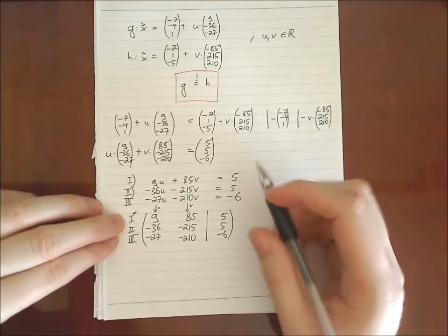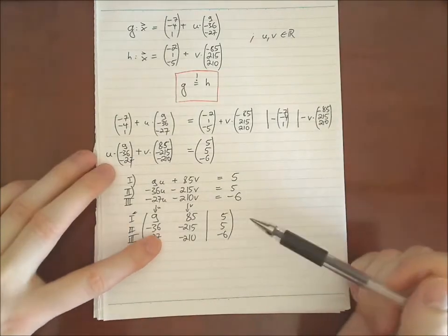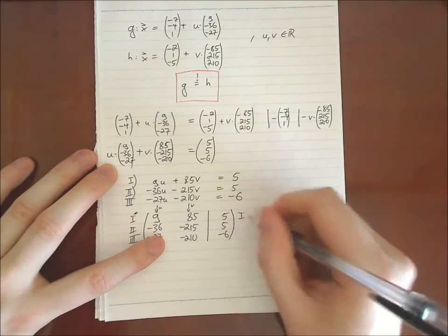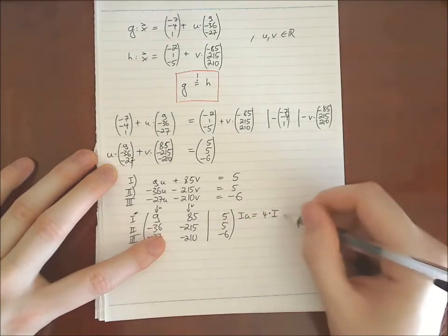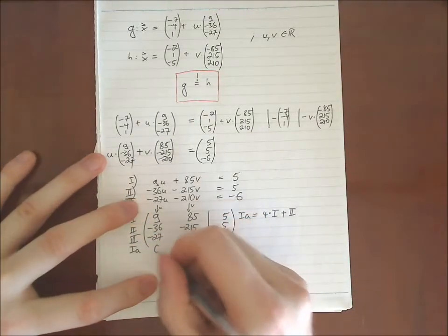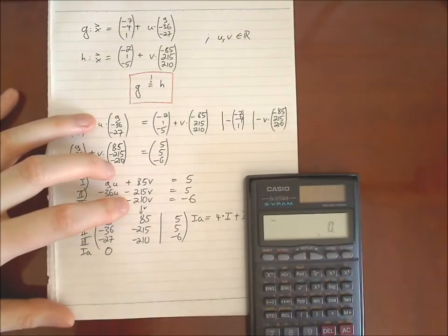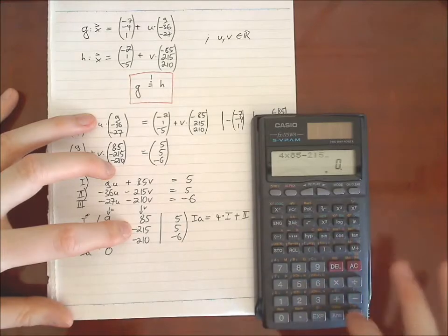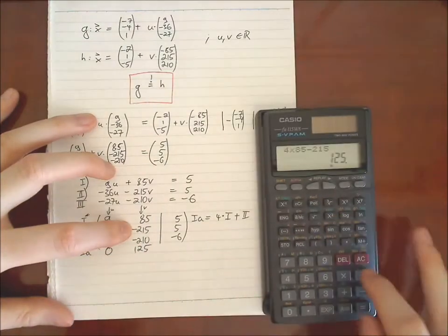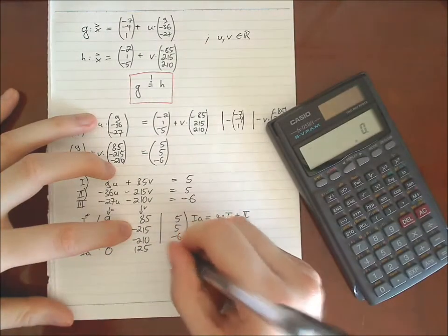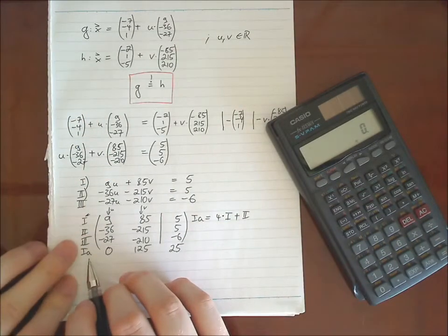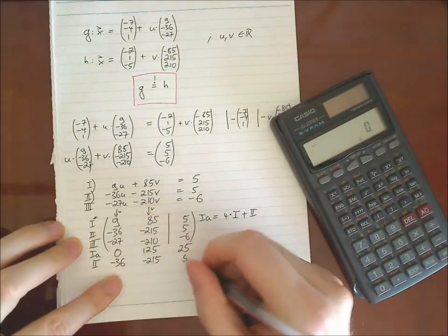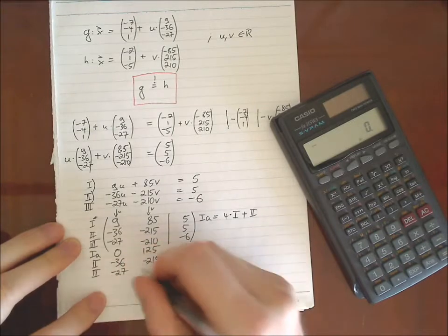And the way we are going to solve this equation is, you see 9 and 36. Then you might remember 9 times 4 is 36. So we can do something here. So we say 1a is 4 times 1 plus 2. So 1a, which is calculated, is 0. Then we might need a calculator. So 4 times 85 plus, in this case minus, minus 215, which is 125. Right side, 5 times 4 is 20 plus 5, 25. Then we, maybe we make a step more, so we don't make any mistake. Minus 36 minus 215, 5. Third equation minus 27, minus 210, minus 6.